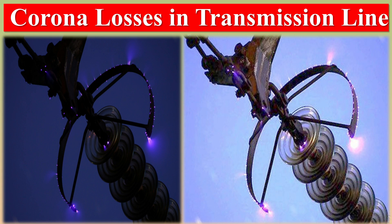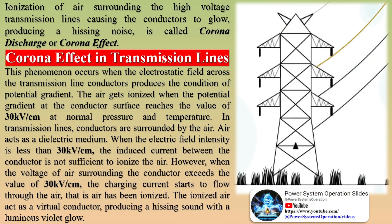Ionization of air surrounding high-voltage transmission lines, causing the conductors to glow and producing a hissing noise, is called corona discharge or corona effect. This phenomenon occurs when the electrostatic field across the transmission line conductors produces the condition of potential gradient. The air gets ionized when the potential gradient at the conductor's surface reaches the value of 30 kV/cm at normal pressure and temperature.